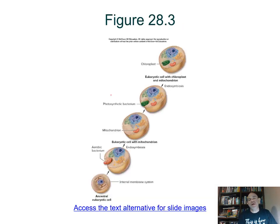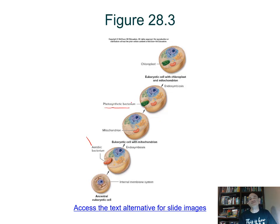A plant or green alga, which is primary endosymbiosis, has two membranes around its chloroplast; brown algae will have three or four. Here's how primary endosymbiosis worked: an aerobic bacterium is taken in by a cell that already has a nucleus and membranes, lives together, and becomes a mitochondrion. That eukaryote later takes in a photosynthetic cyanobacterium, and now you have photosynthetic cells.